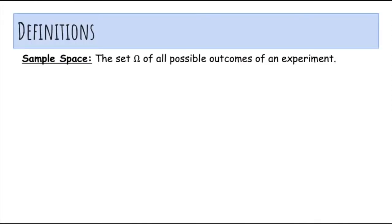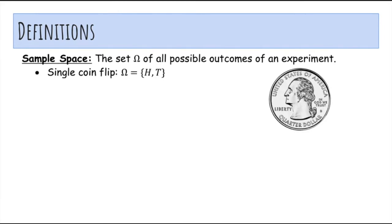So first, some definitions. A sample space is a set of all possible outcomes of an experiment. For example, if you flip a coin once, the sample space would be heads or tails.